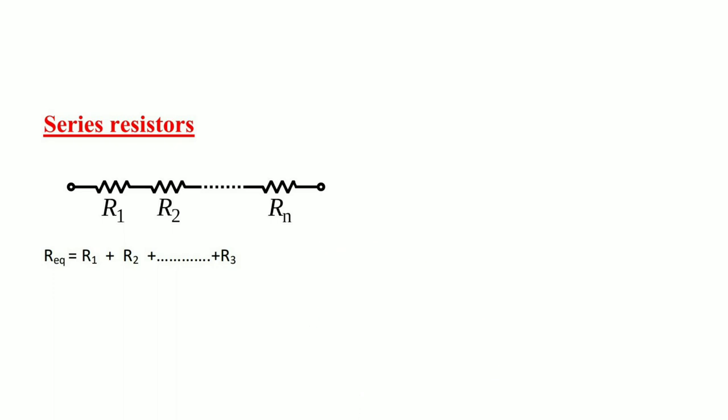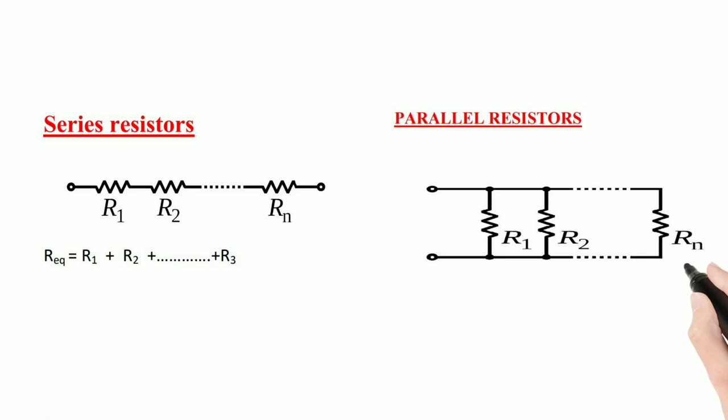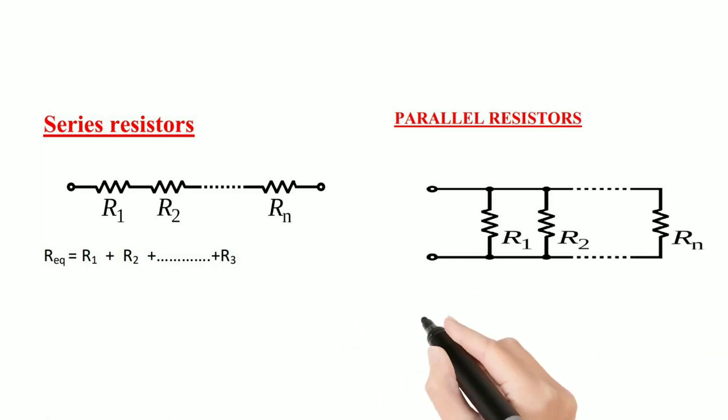If we put N numbers of resistance in series, equivalent resistance will be R1 plus R2 plus Rn. If we put N numbers of resistance in parallel, equivalent resistance will be 1 by R1 plus 1 by R2 plus 1 by Rn.